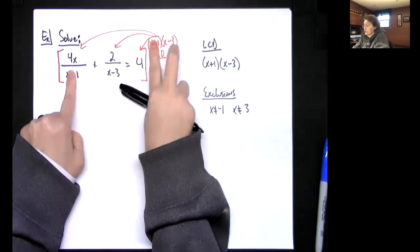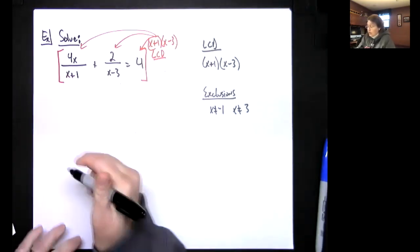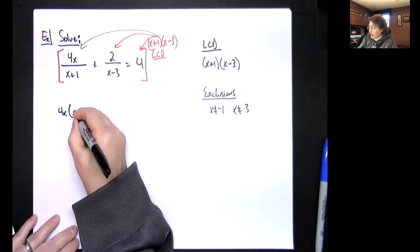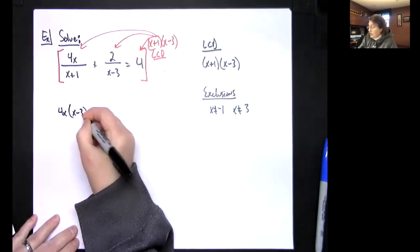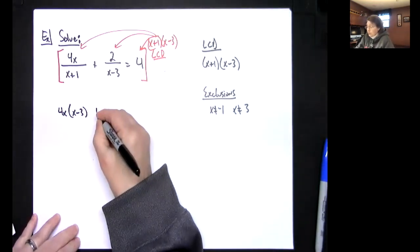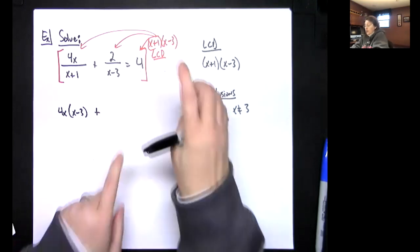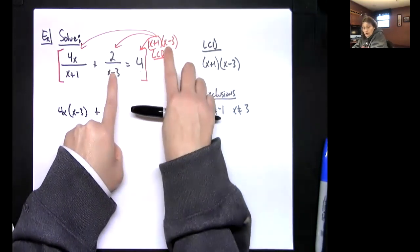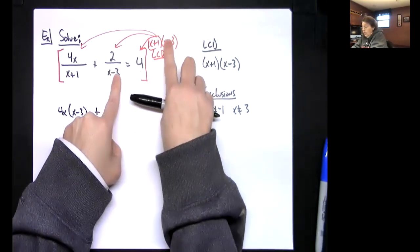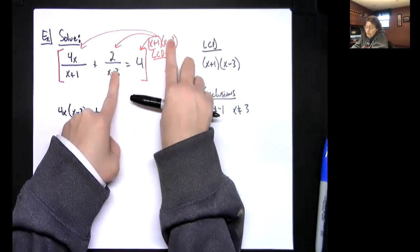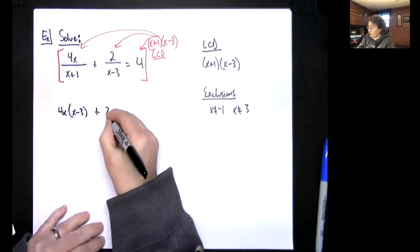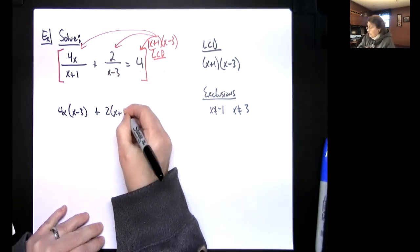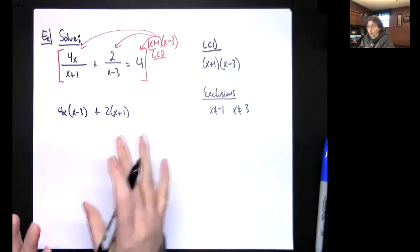When we distribute the first time, the (x + 1) factors go away and I'm left with 4x and (x - 3). So 4x times (x - 3) — and notice the fraction is gone, which is what we want. Then distributing to the middle term, the (x - 3) factors go away and I'm left with 2 and (x + 1).